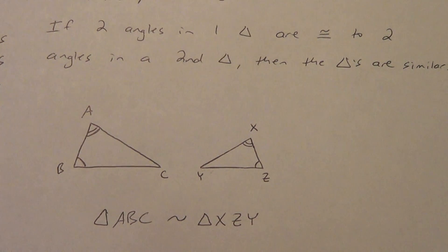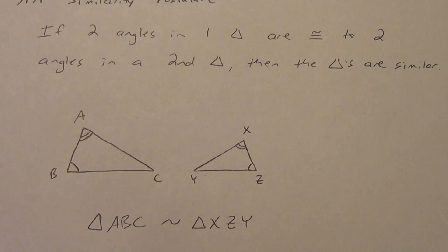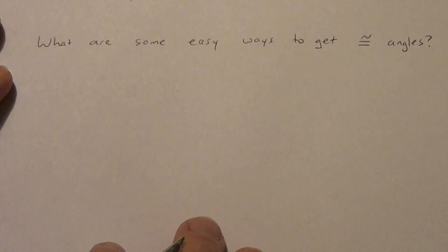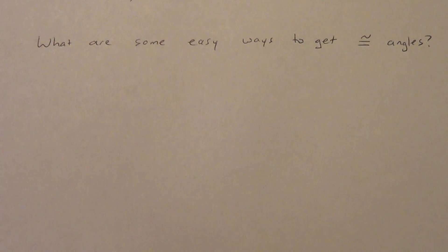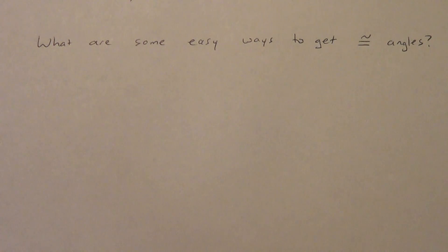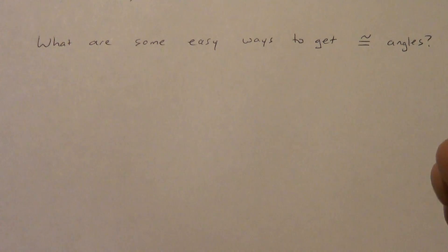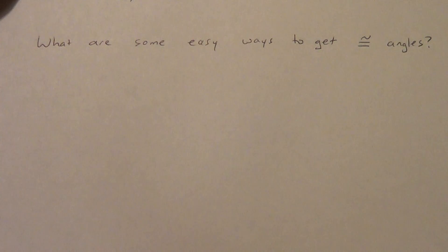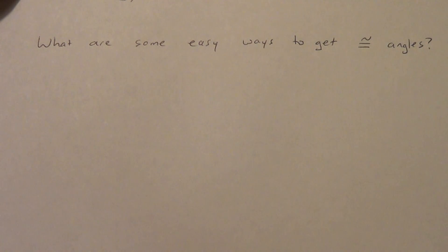That's our angle-angle similarity postulate — it's not real complicated. Let's do a little bit of review. What are some easy ways to get congruent angles? I want you to pause the video, write some down, and then come back and we'll talk through some — maybe you'll even think of some that I didn't think of.